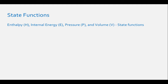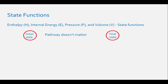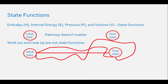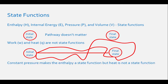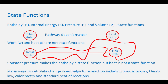Enthalpy, internal energy, pressure, volume, and temperature are all state functions. This can be determined because all the variables used to describe these quantities are capital letters. A state function only depends on starting or ending states — it does not matter the path it takes to get there. Work and heat are not state functions, meaning it does matter the path taken to calculate these quantities. This can be determined because the variables W and Q are lowercase letters. Even though heat is the same as enthalpy, it is the constant pressure that makes enthalpy a state function, whereas heat is not.